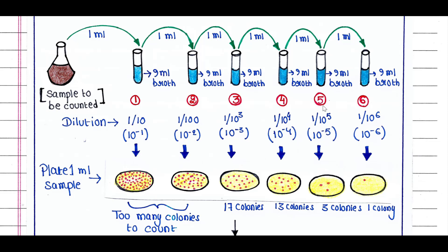Again, we will take 1 ml culture from tube 5 and put it in 9 ml broth in tube 6. That means the dilution is 10 to the power minus 6.